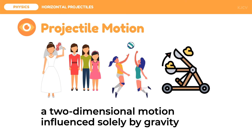Let us first define projectile motion. It is a two-dimensional motion influenced solely by gravity. By two-dimensional motion, we mean that the object following projectile motion is moving both horizontally and vertically, and the only force acting on the object is gravity. Common examples of projectile motion are tossing of the bridal bouquet, playing ball sports like volleyball, and machines like the catapult.